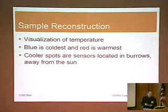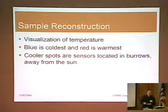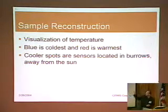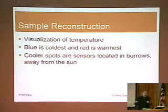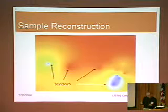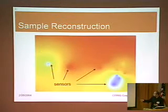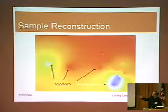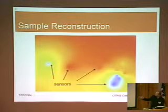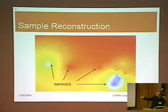The next slide shows a sample reconstruction of the temperature field on Great Dark Island. The visualization depicts the temperature — blue depicts the coldest and red the warmest areas — and cooler spots are sensors located in burrows that are away from the sun. Here you see a reconstructed field, and you can see some spots here with different colors. These represent sensor locations, and this is an interesting observation: there are sensors where the temperature is much lower, and areas where we have a higher temperature.